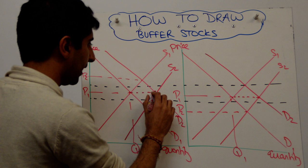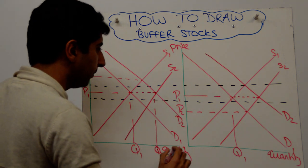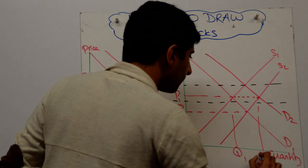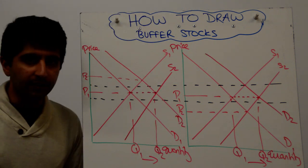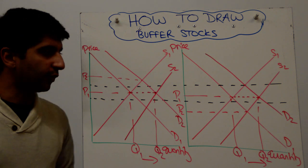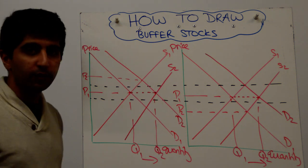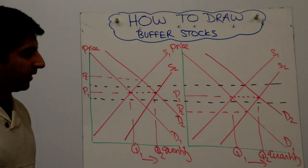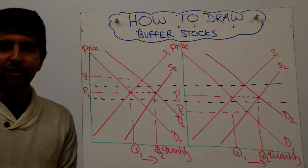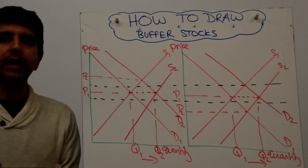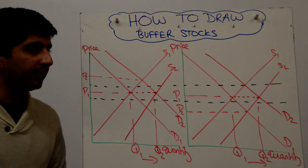On both diagrams, you can label your new quantity now in the market where D2 cuts S2. And that prevents price fluctuations in a buffer stock scheme. So that's how you draw these diagrams, under either rising price pressure or falling price pressure. That's how buffer stock schemes work in solidifying and keeping prices stable.